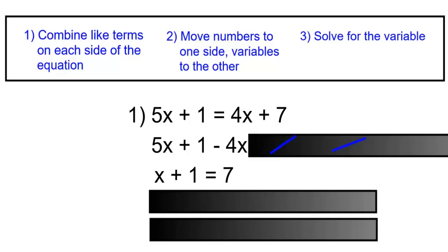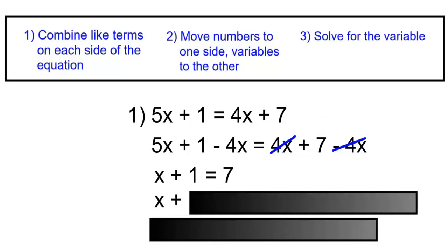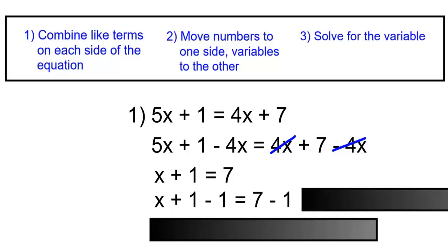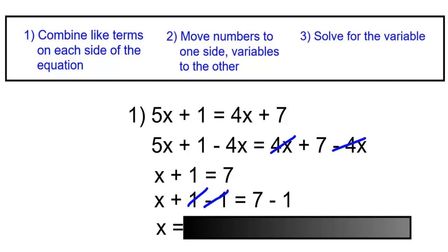Next, we will remove the plus 1 by subtracting 1 from both sides. x plus 1 minus 1 equals 7 minus 1. Plus 1 and minus 1 will cancel, leaving us with x. And 7 minus 1 is 6.